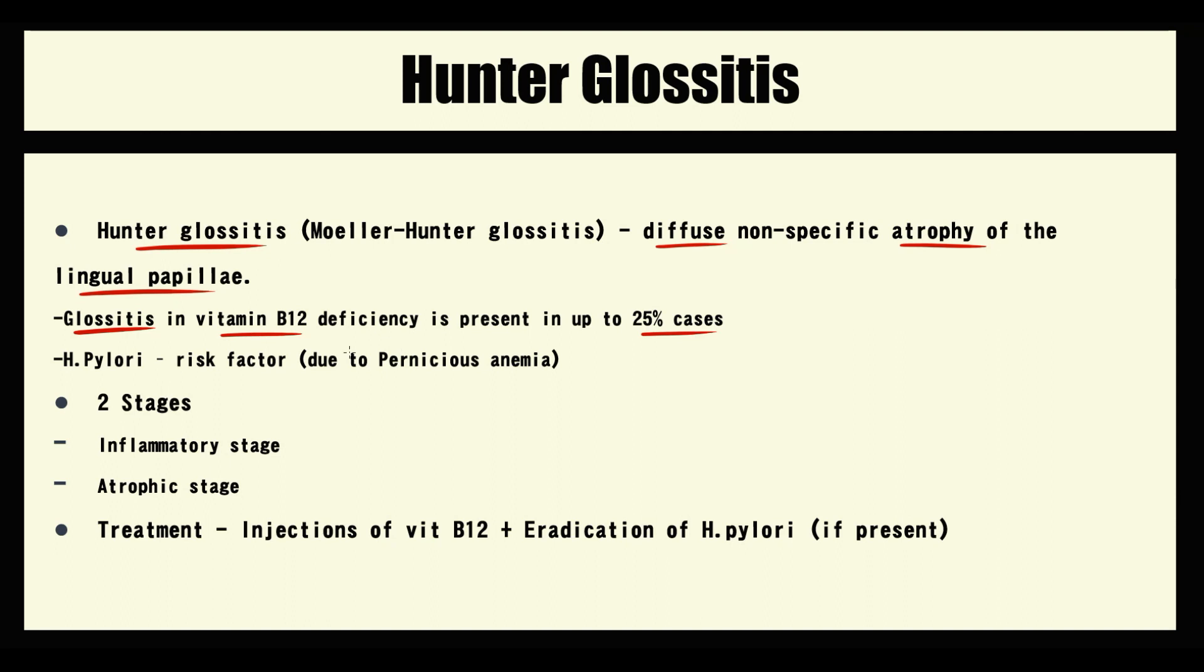The most common risk factor associated with Hunter glossitis is Helicobacter pylori infection, because H. pylori can predispose to pernicious anemia, and in turn, pernicious anemia can cause vitamin B12 deficiency.